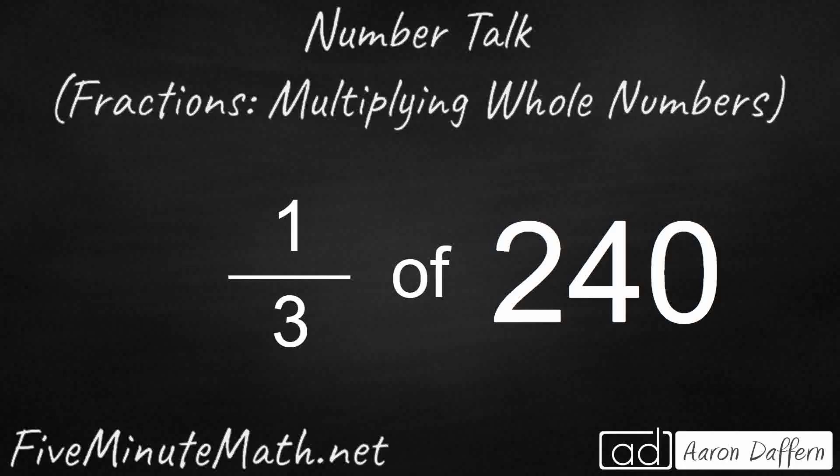Hello and welcome to 5-Minute Math. Today for our number talk, we are multiplying the fraction one-third by the whole number 240. We know that we're multiplying here because we see 'of,' and that's typically what we use to signify multiplication, so we need to multiply a fraction and a whole number.